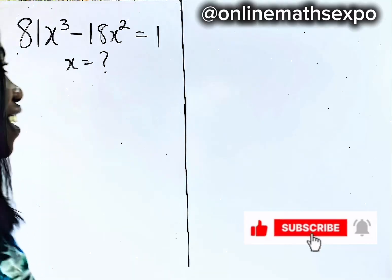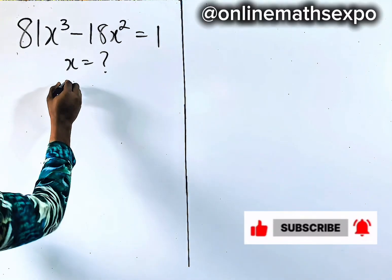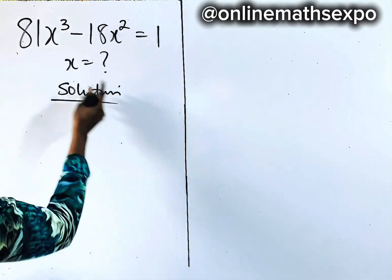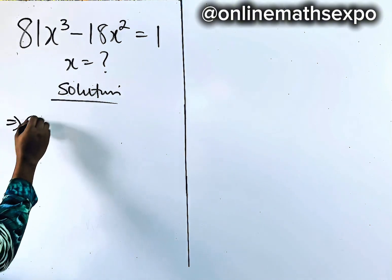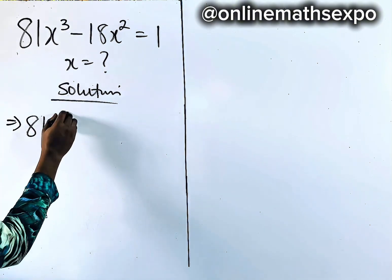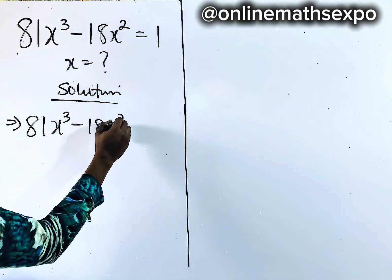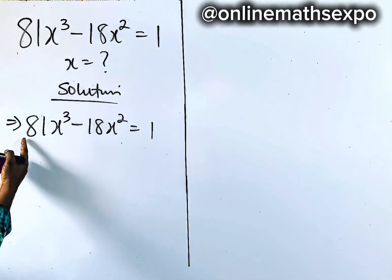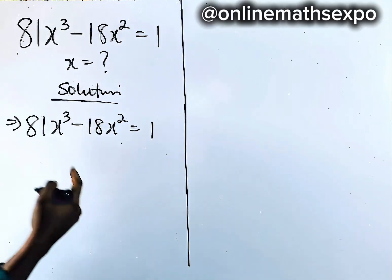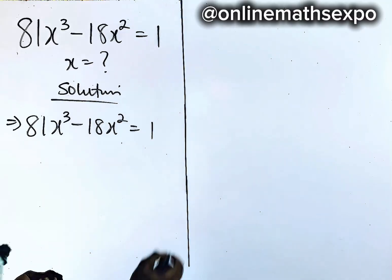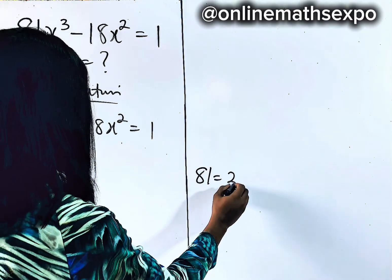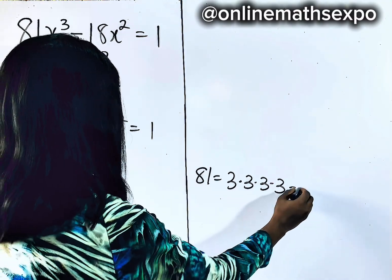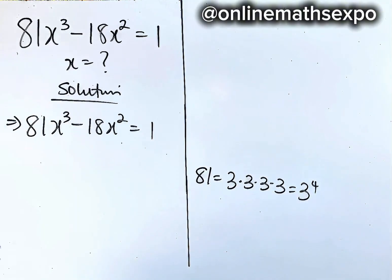Let's do it together. So we begin with our solution. We have 81x cubed minus 18x squared is equal to 1. Now this 81 and 18, we can adjust it. 81, you know, is 3 multiplied 4 times, which is 3 to the power of 4.